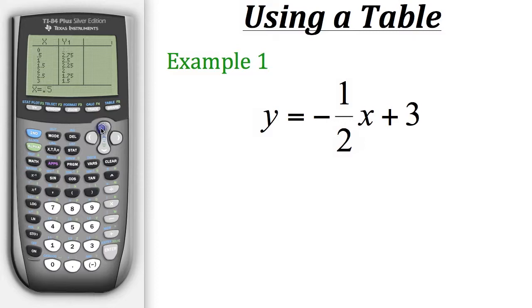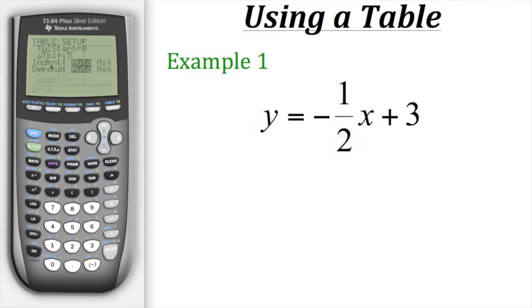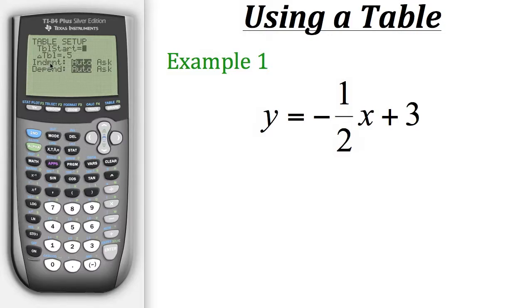Now what if you don't necessarily want this entire list of values, but you only want very specific ones? Now down at the bottom, we have independent and dependent. By default, the calculator has those on auto, which means the calculator uses the settings we have and generates the x values and their corresponding y values automatically, and we don't have to do anything.